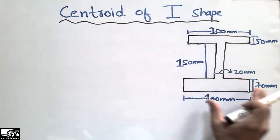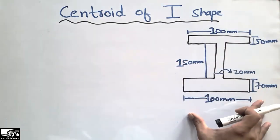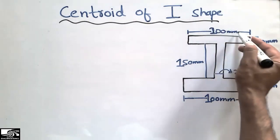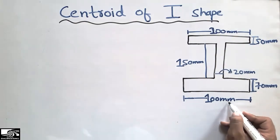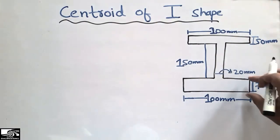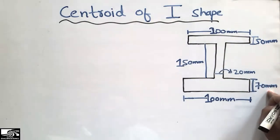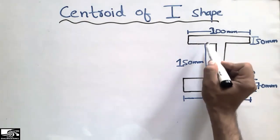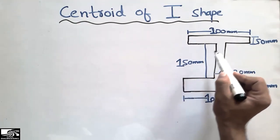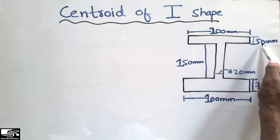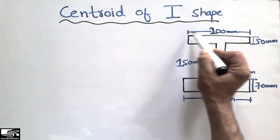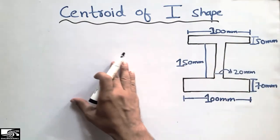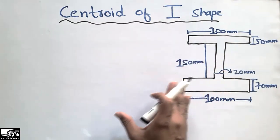The dimensions of this I-shape are given to us. The length at the bottom is 100 mm and the top flange is also 100 mm. The thickness of the flanges is 70 mm, and the thickness of the web is 20 mm. The depth of the web portion is 150 mm, and the height of the top flange is 50 mm with a length of 100 mm.